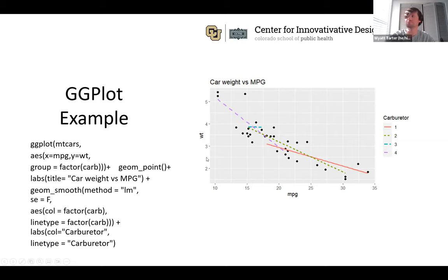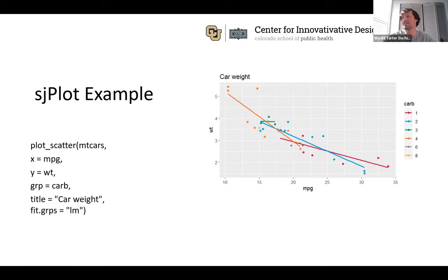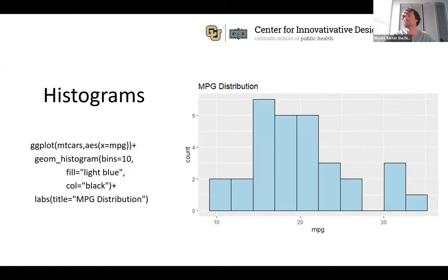The sjplot version is much faster but can't do line types — all lines look the same. The only difference from the basic scatter plot call is adding `fit.groups`, which tells it to fit a regression line per grouping variable. If you just use `fit` without `.groups`, it creates one overall regression line rather than per-group lines.